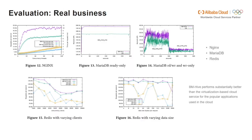A more important experiment is how well XJargon performs for common applications used in the cloud. We ran Nginx, memDB, and Redis servers in bare metal guests and measured how fast they could respond to queries. For most popular applications, the bare metal guest performed substantially better than virtualization-based cloud servers.